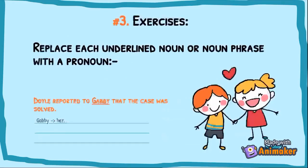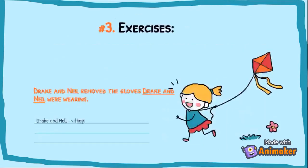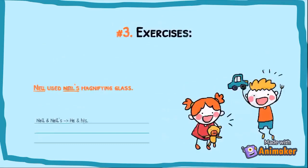Drake and Nail remove the gloves Drake and Nail were wearing. Drake and Nail are more than one person, so it will be: they. Now use Nail's magnifying glass — Nail is the same person, so it will be: he and his. Thanks for listening, bye!